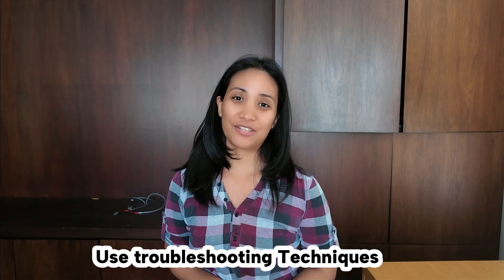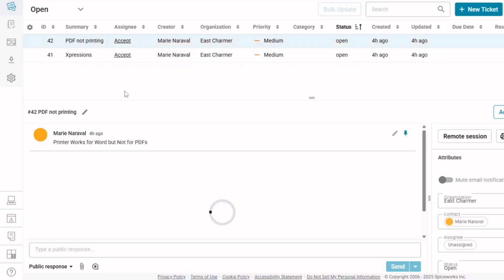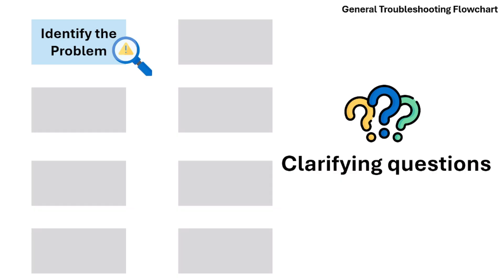Here are some examples. For our example, a user's printer works when printing Word documents but not when printing PDFs. One technique you can use is a general troubleshooting flowchart, and it starts with identifying the problem — gathering information from the user about what's happening and asking clarifying questions to narrow down the problem.